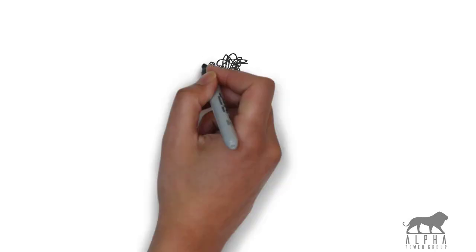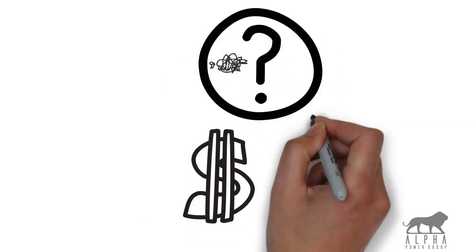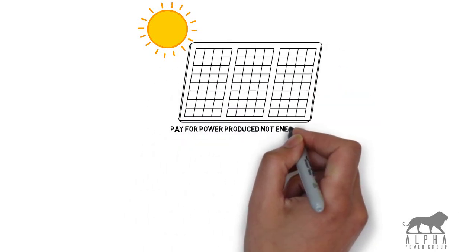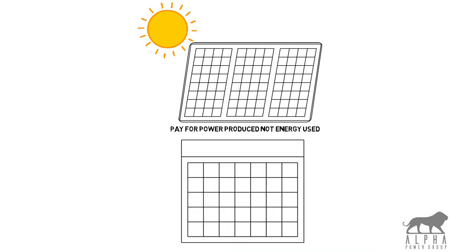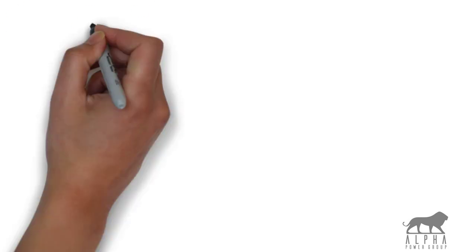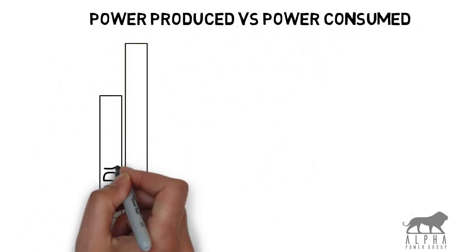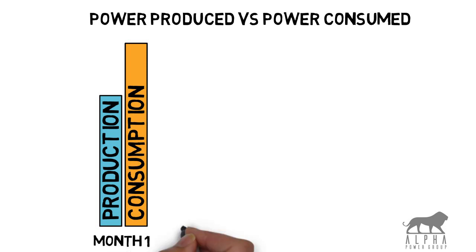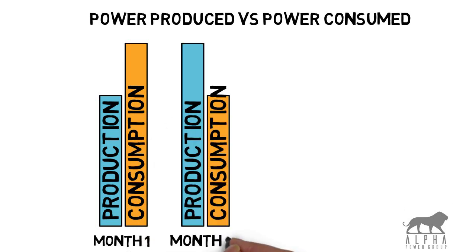One way the PPAs can get confusing is in how customers get billed for their power. Because solar production is independent of usage, your power bill is based off the power produced, not by how much you've used. It may seem counterintuitive at first, but when looked at over a 12-month span, you'll see that it averages out quite nicely and significantly less than what you would have paid to the other guys.